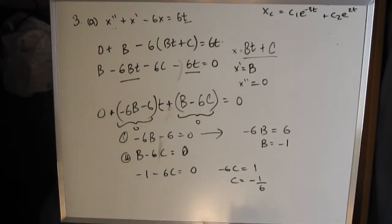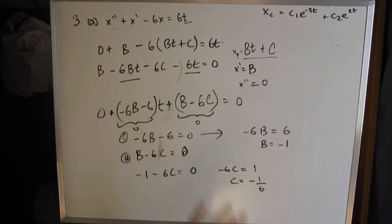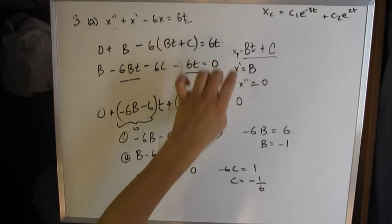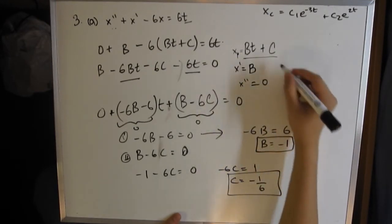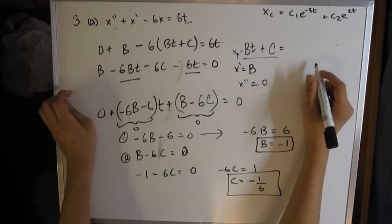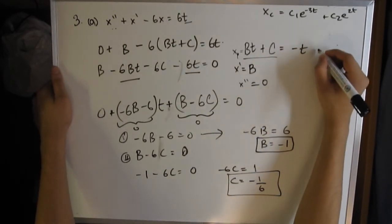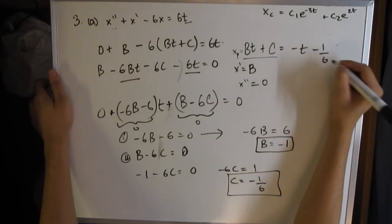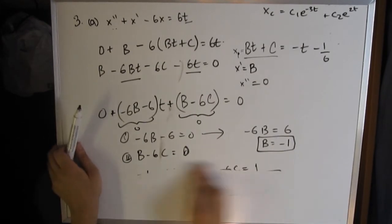This is called the particular solution. I'll call it xp for now. We substitute c and b into our initial assumption. xp = bt + c. So you get -t - 1/6. I'm going to erase all this to write the final answer.